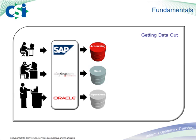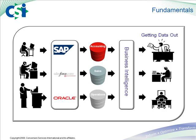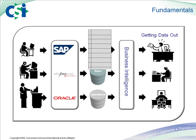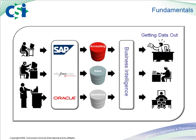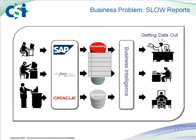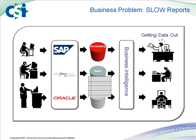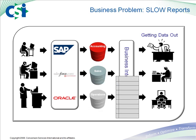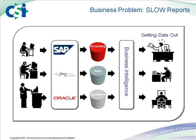Getting data out of the application database and turning it into information is something we call business intelligence. Now, in the early years of business intelligence, it was common for organizations to point their business intelligence tools directly at the application databases. But when the reports would request the data from the application database, the processing of the data would run painfully slow. It wasn't that the business intelligence tool was poor — it's just that the application database, which is designed to store single records at a time, was being asked to extract hundreds of thousands, if not millions of records at once. So consequently, reports would take a very long time to run, and the business intelligence tool would often take the blame. So this is the first problem we encounter in many organizations: slow reports and dashboards.